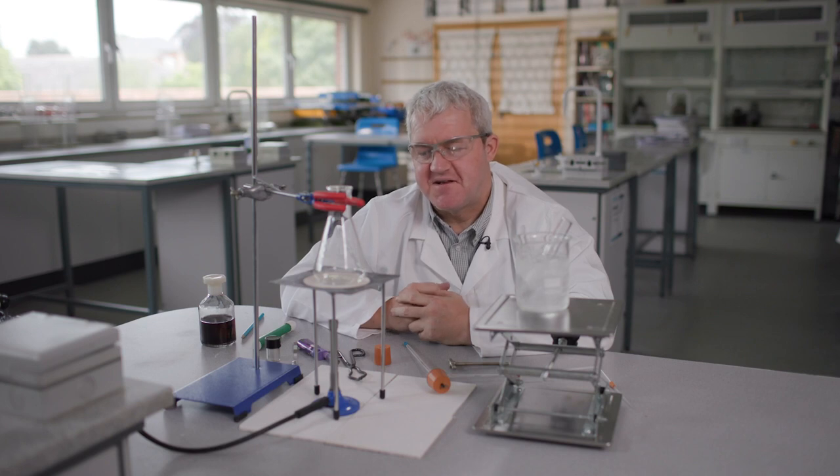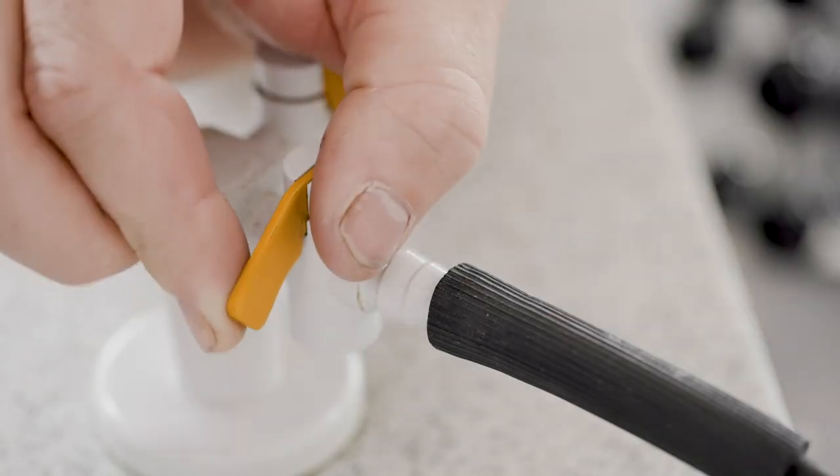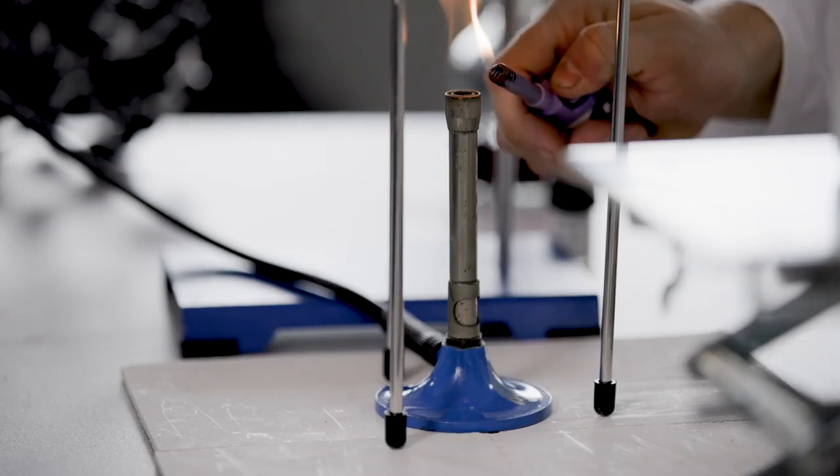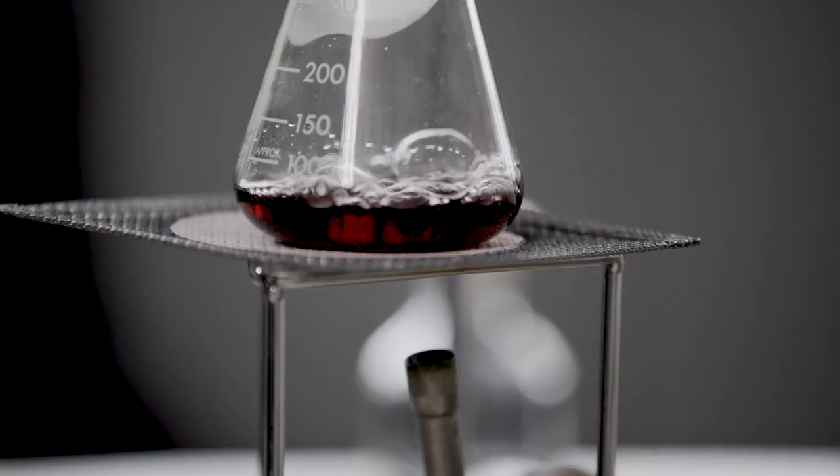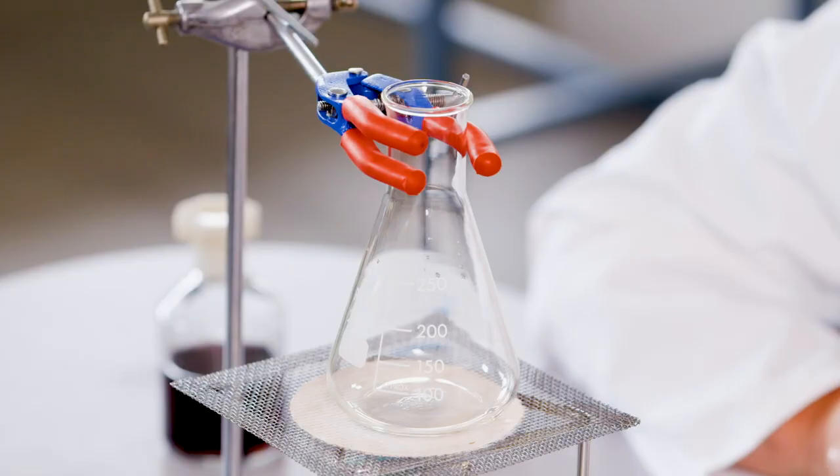So there are some important safety considerations in this practical. First of all, we're using a Bunsen burner. So it's very important that students know how to safely light a Bunsen burner and how to control it. Also, we're going to be heating the water in an elevated position, so it's important to clamp the conical flask.